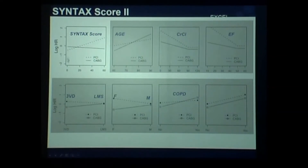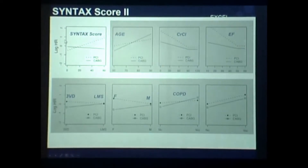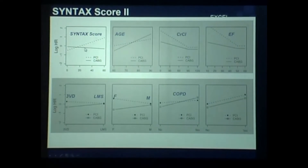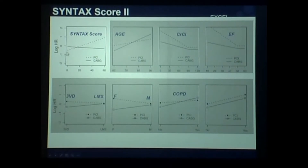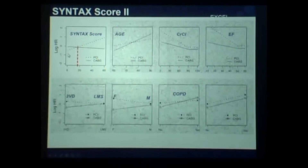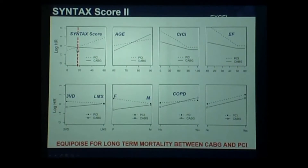I'm not very much a statistician — I force the statistician to show me statistics. Here you have the Syntax score on the horizontal axis and the risk for death at four years — the log of the hazard ratio — on the vertical axis. The solid line represents surgery, and as you can see, surgeons are immune to the Syntax score ranging from 20 to 60 — nothing happens as the Syntax score increases. But with PCI, if you increase the Syntax score, the risk of mortality at four years increases. The equipoise point of equality is about 18.